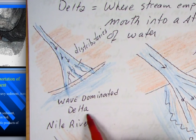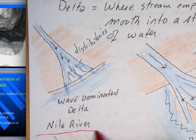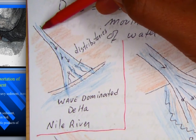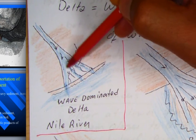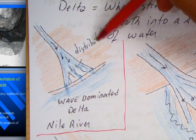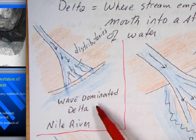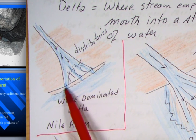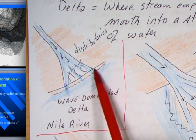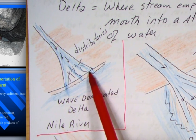This one's called a wave-dominated delta, like the Nile River. The main trunk of the Nile comes down and spreads out into the delta — those are called distributaries. The key thing about wave-dominated deltas is you're going to have sandbars parallel to the coastline, because wave energy is greater than that of the river. That'd be like a beachfront.